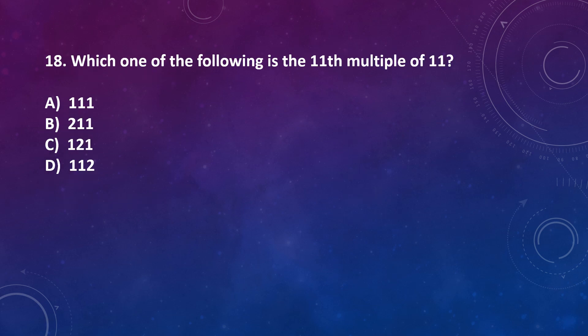Question number 18: Which one of the following is the 11th multiple of 11? Option A: 111, Option B: 211, Option C: 121, Option D: 112. 11th multiple of 11 means 11 multiplied by 11, that is 121. So correct answer is option C.